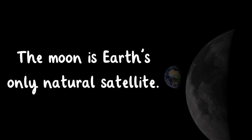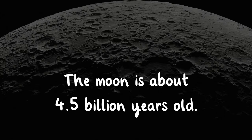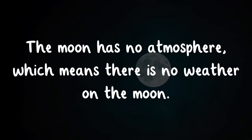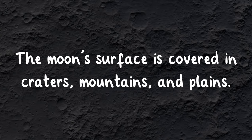The Moon is Earth's only natural satellite. The Moon is about 4.5 billion years old. The Moon's gravity affects the tides on Earth. The Moon has no atmosphere, which means there is no weather on the Moon. The Moon's surface is covered in craters, mountains, and plains.